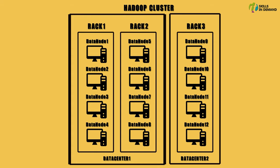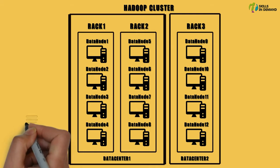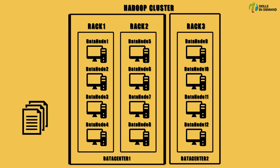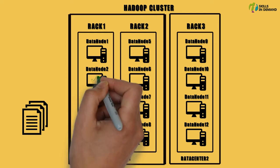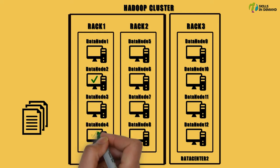Now let us try to understand some of the advantages of using rack awareness. We know that Hadoop keeps multiple copies for all the data that is present within the HDFS. If we make Hadoop aware about the rack topology, this would help Hadoop in placing each copy of data across different racks.